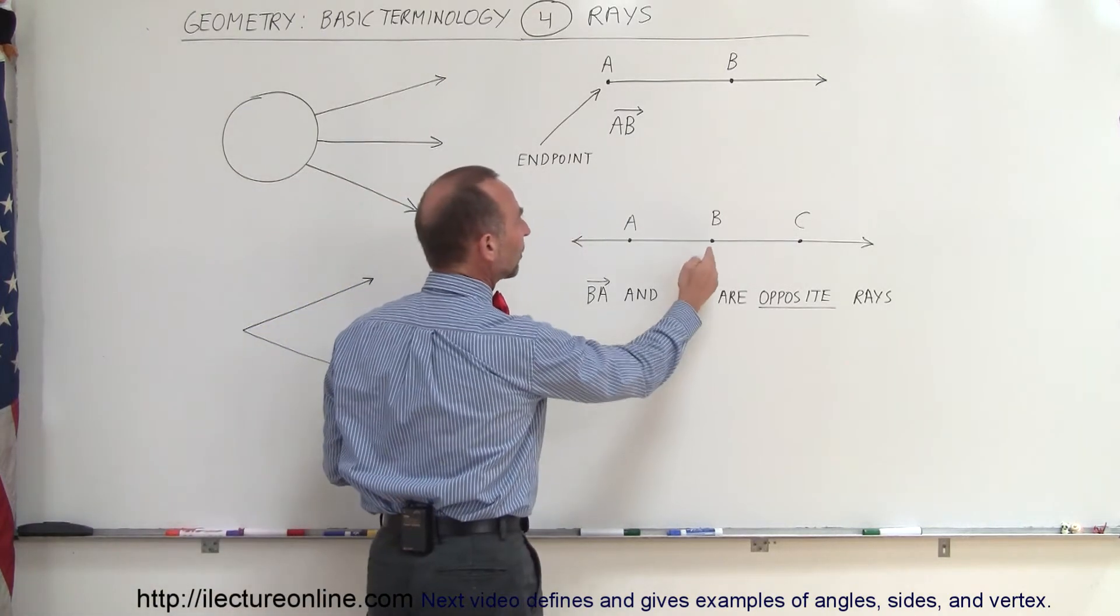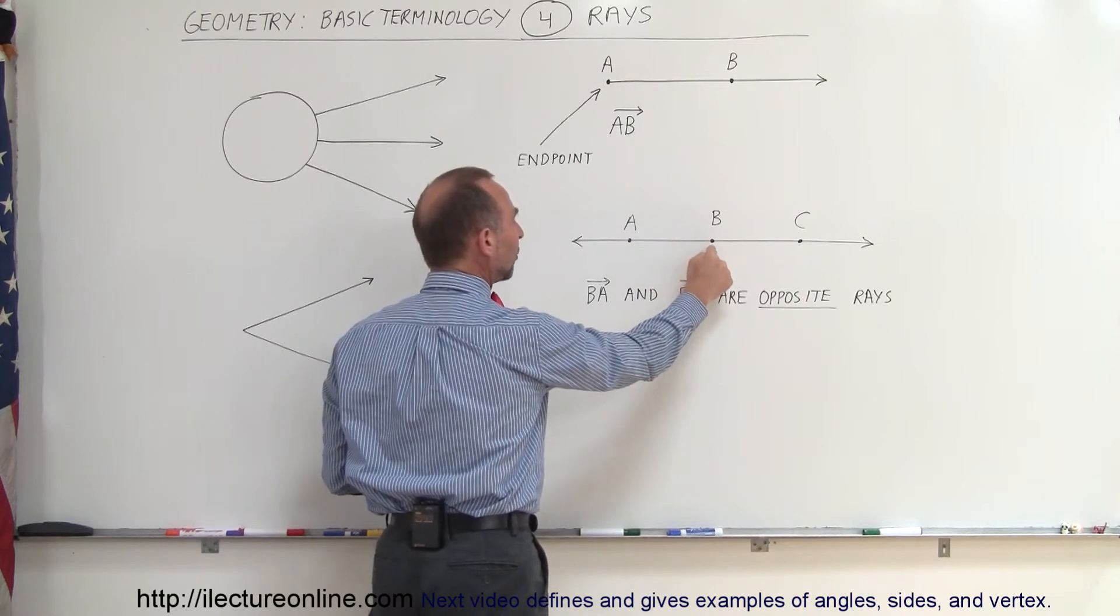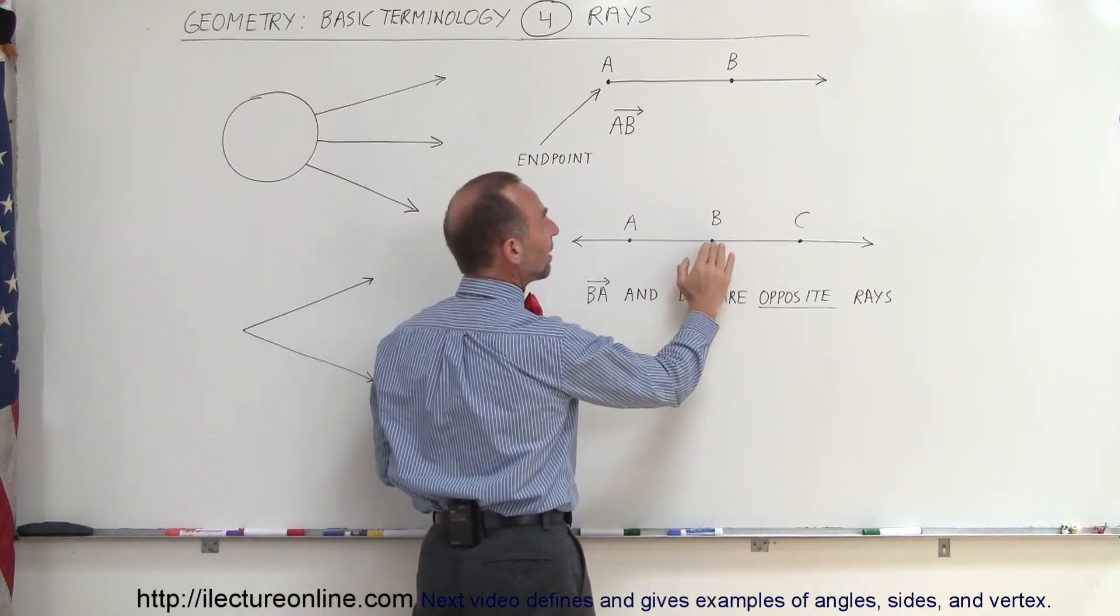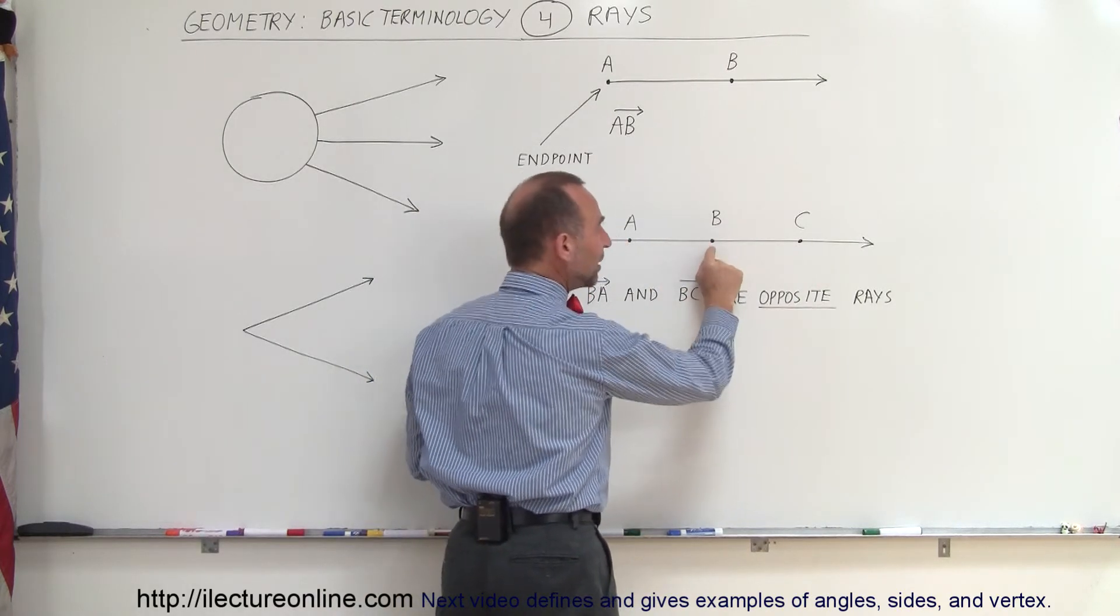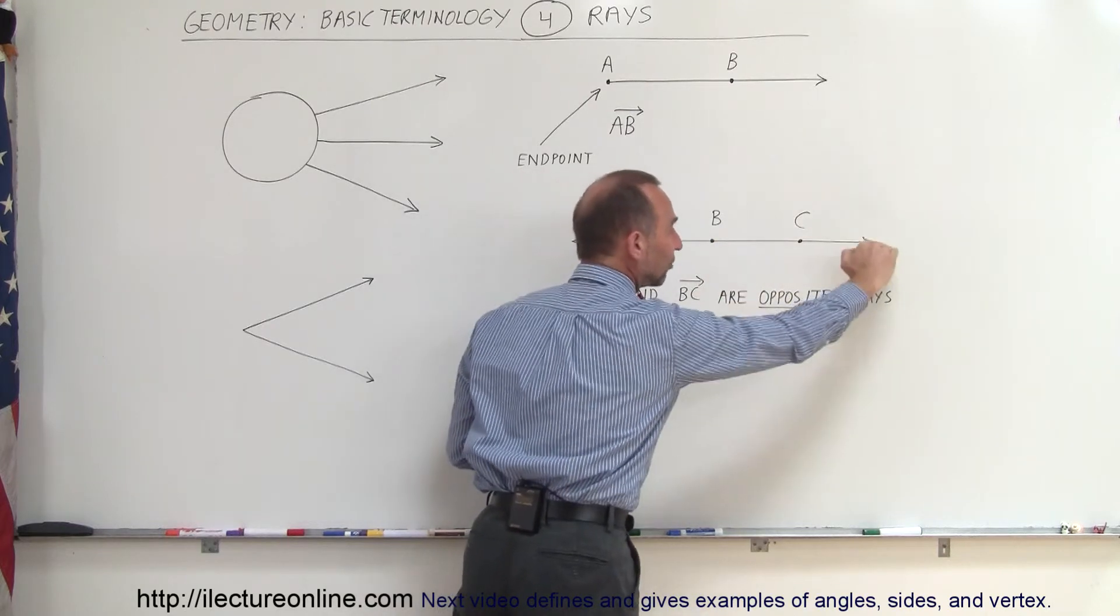So here we have the ray with endpoint B in the direction of A. This is the ray BA indicated like this. We can also think of it as the ray BC, with B being the endpoint and C being the direction in which the ray is drawn.